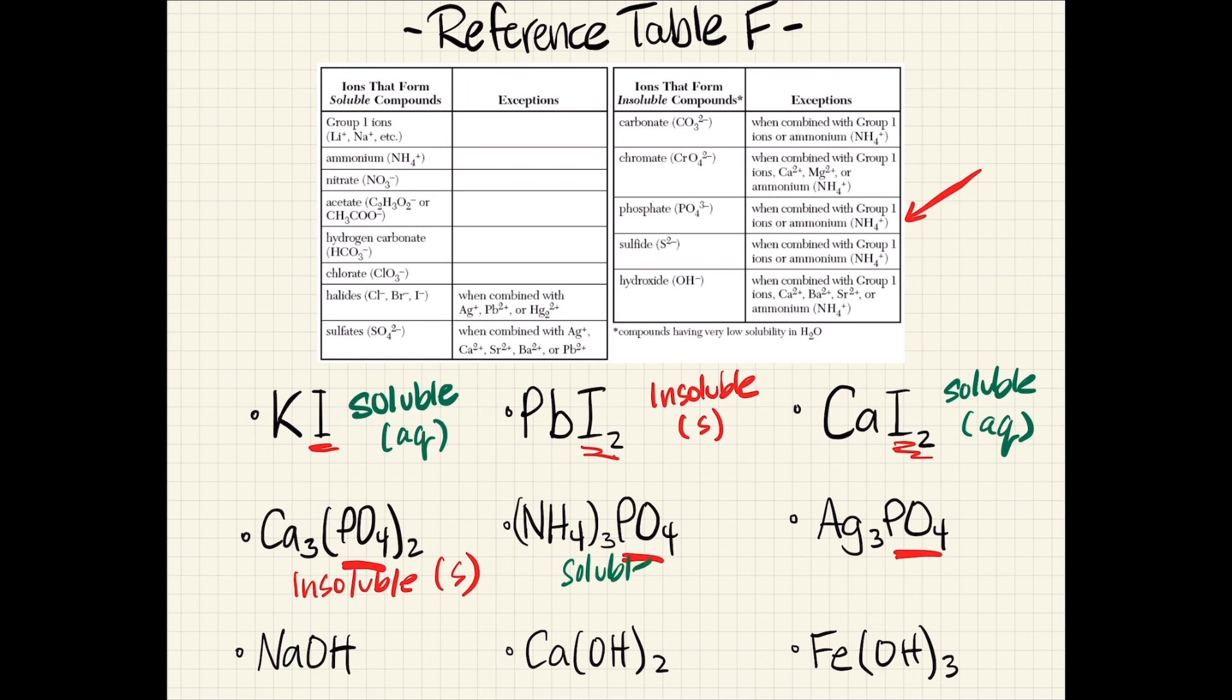The second one is ammonium phosphate. We can see in the exceptions for phosphate that it will be soluble if ammonium is attached.